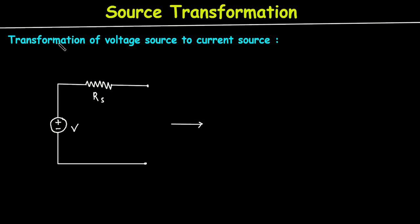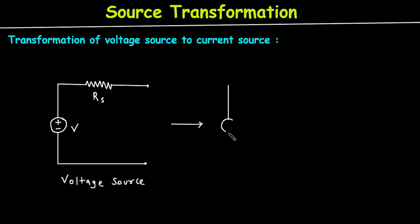Source transformation: transformation of a voltage source to a current source. Here we can see this is a voltage source. We have to convert this voltage source into its equivalent current source. The polarity of this voltage source has positive on the upper side and negative on the lower side, so the current source direction will be as shown. The series resistor will be connected in parallel to this current source.